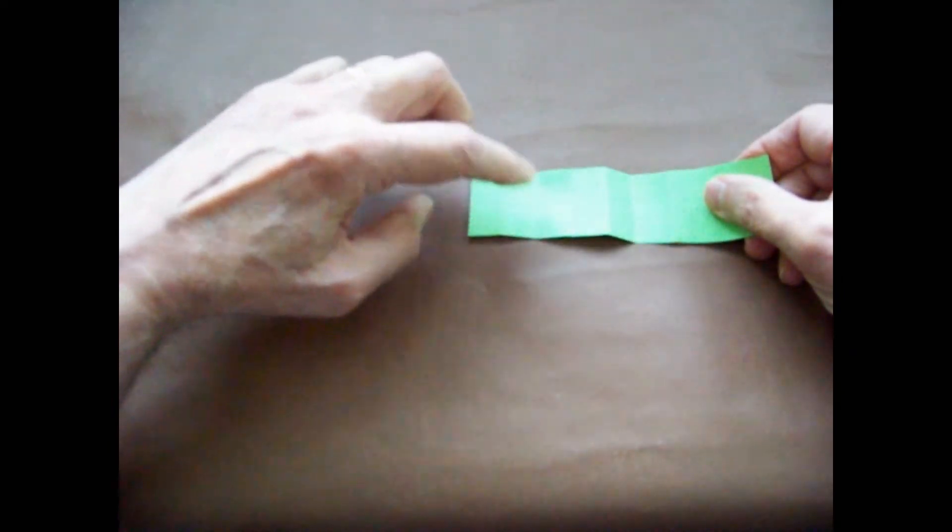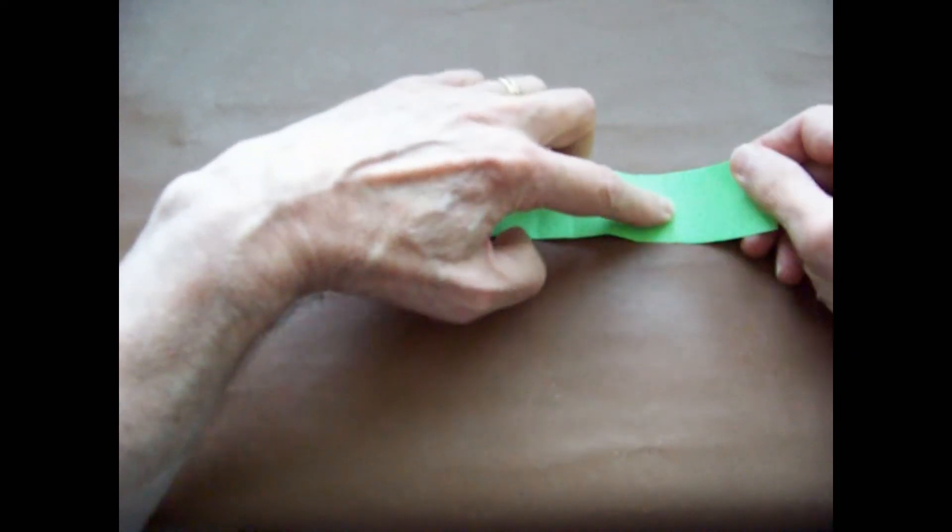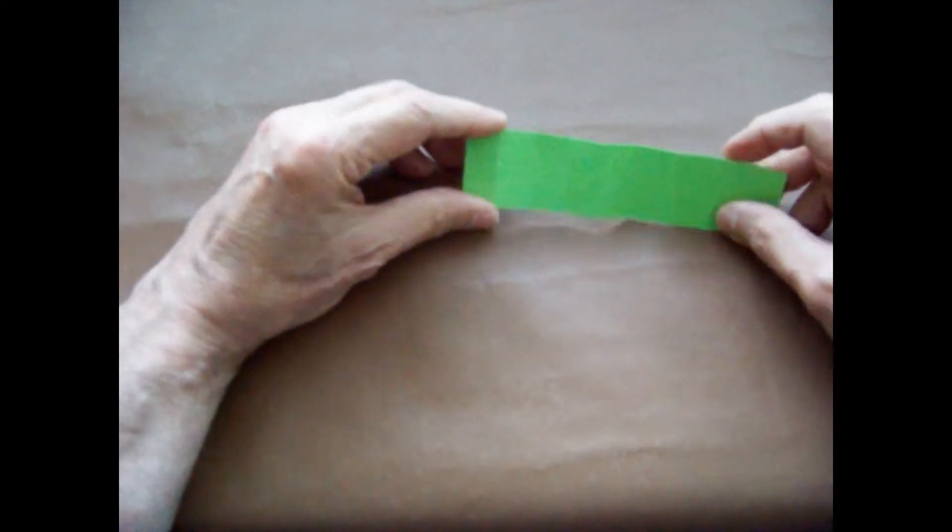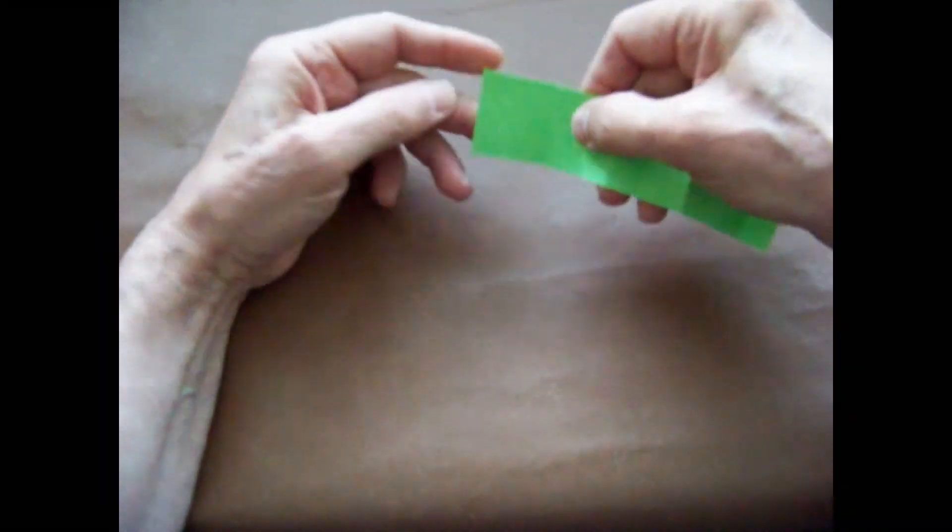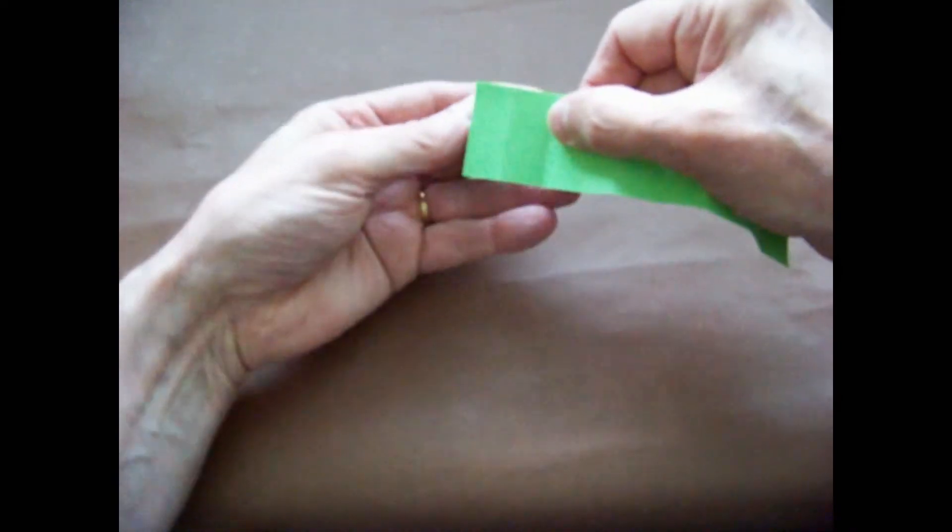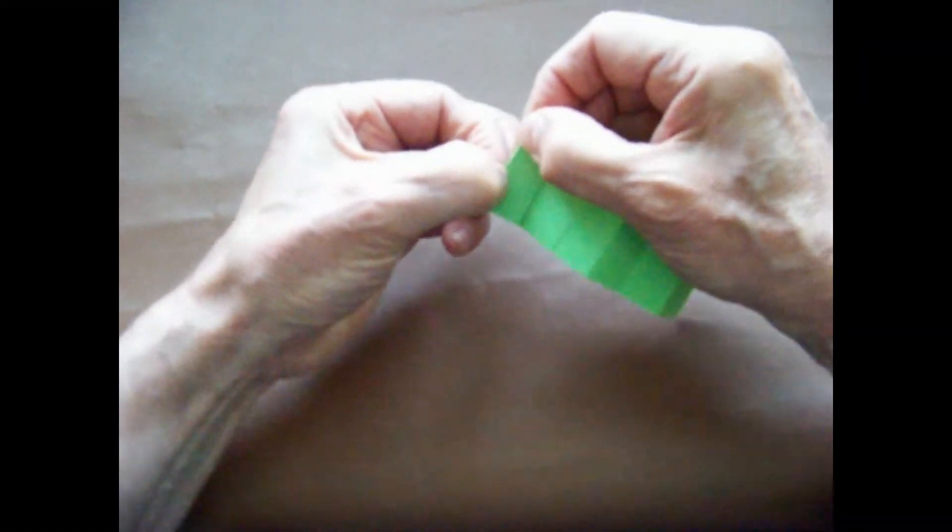And we have 1, 2, 3, 4, 5, 6, 7, 8, 9 segments divided by 8 lines. We want the lines all folded in the same direction. So we fold all lines over in the same direction, creasing tightly.